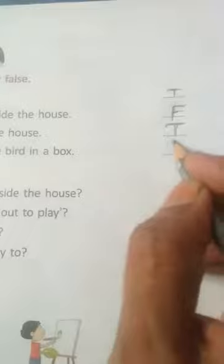Number 4. Mahi wanted to keep the bird in a box. Is it a correct sentence? No. Joe wanted to keep the bird in a box. But here it is written Mahi wanted to keep the bird in a box. That is false.